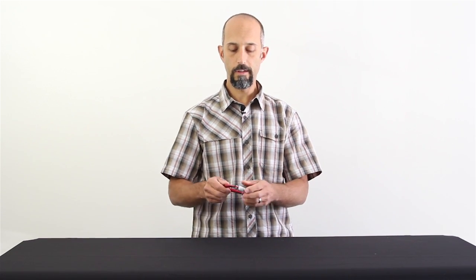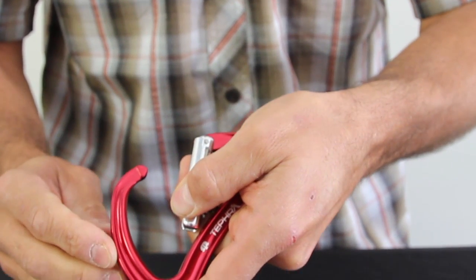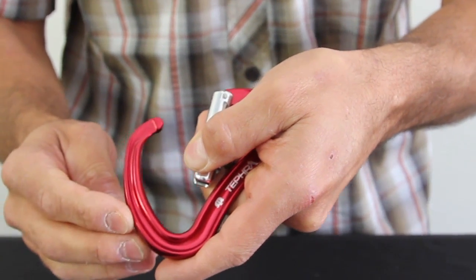One other great thing about the Tefra is it's got a really low profile nose. There's not a giant hook on here or anything to snag, so it makes it really easy for loading on and off your harness or loading ropes in and out.